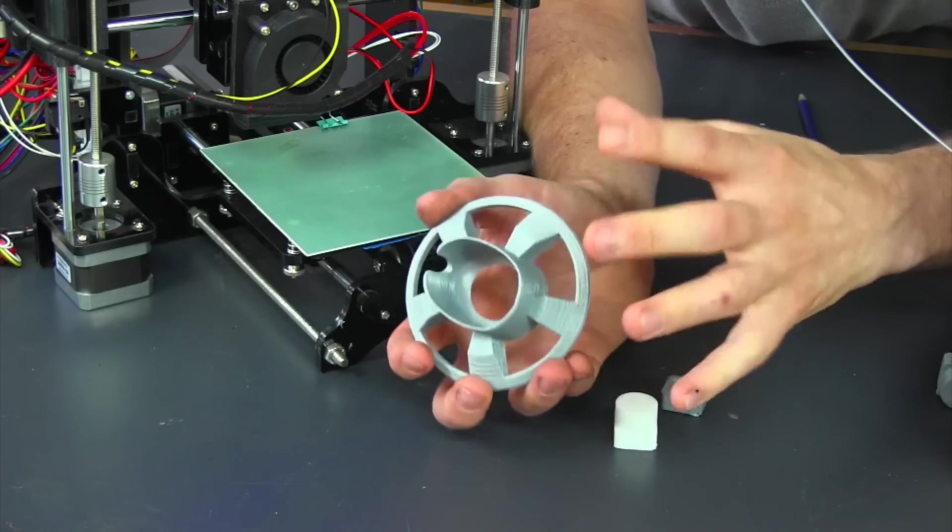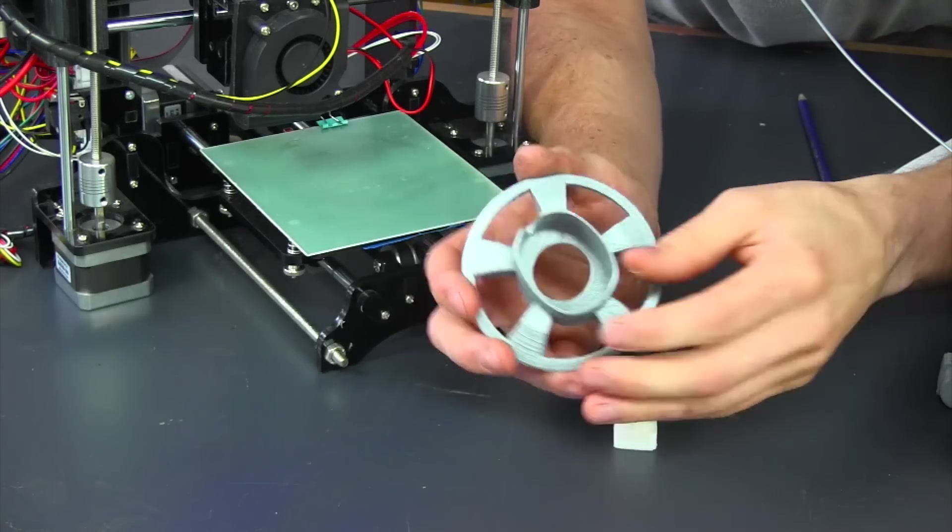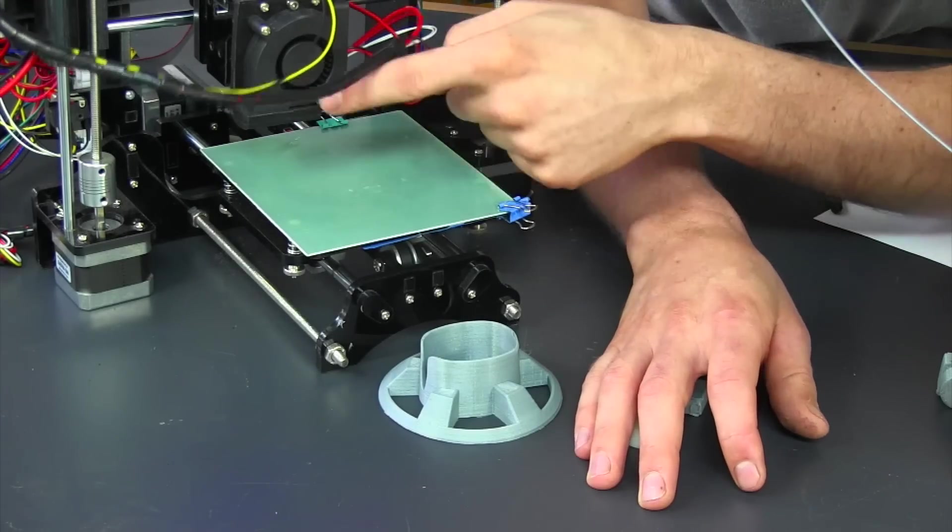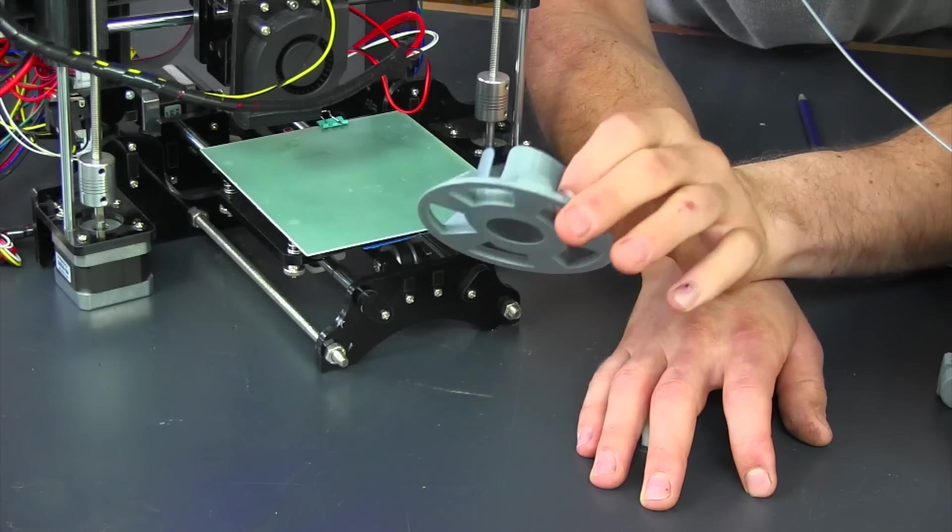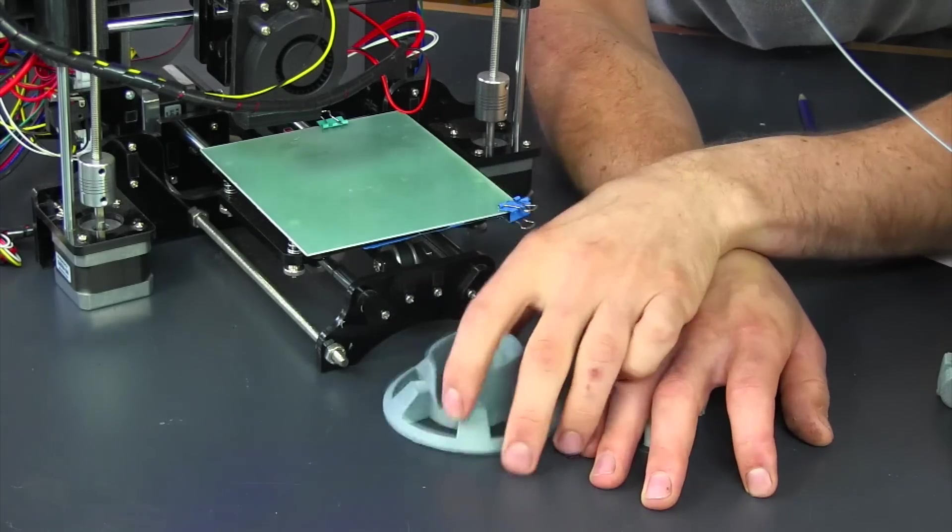The way I have this printer set up is a 0.4 millimeter nozzle and the layer height I'm using is 0.2 millimeters high.